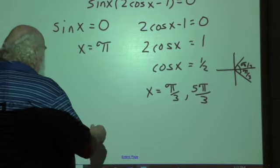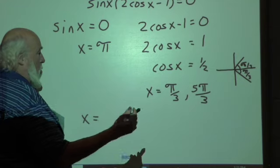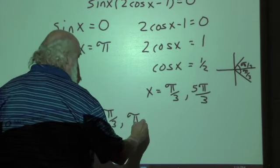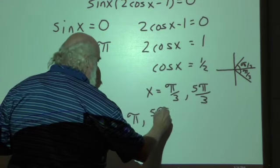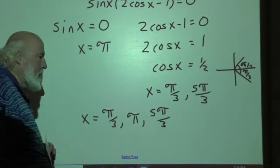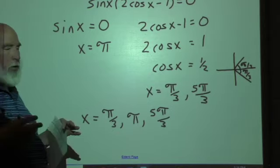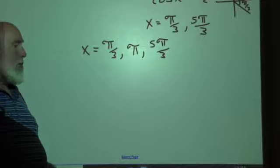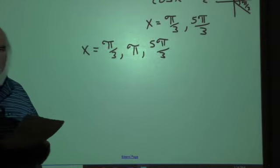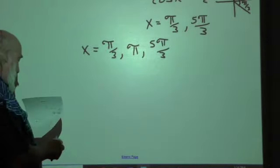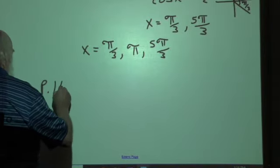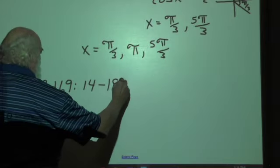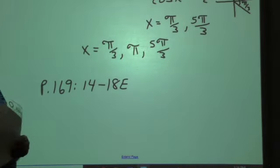All right. So our answers here for critical numbers, we'll put them in order. Pi over three, pi, and five pi over three. Okay? All right. So a little mathematical manipulation for you today. Practice, practice, practice. Always helps. Before you go up to the next step, next level. Okay? So your assignment for this is page 169, problems 14 through 18. Good luck.